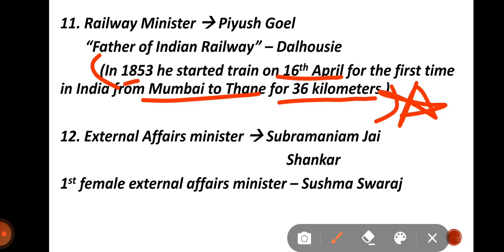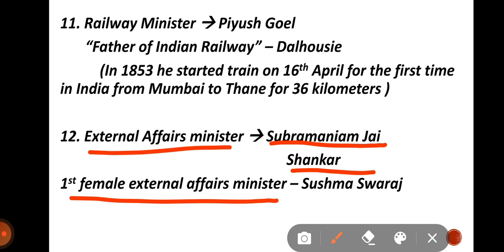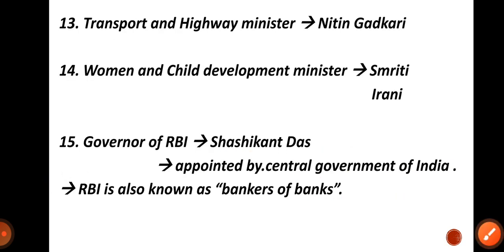Question 12 — External Affairs Minister: that is Subramaniam Jaishankar. The first female External Affairs Minister was Sushma Swaraj, but she is no more. So Sushma Swaraj was the first female External Affairs Minister.